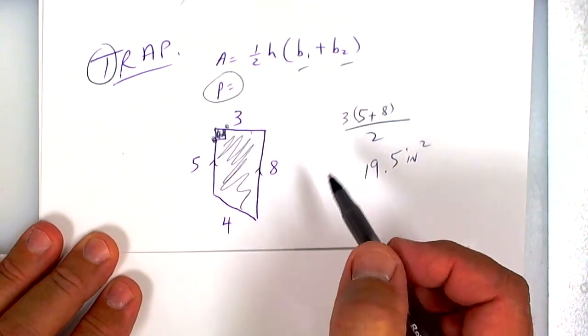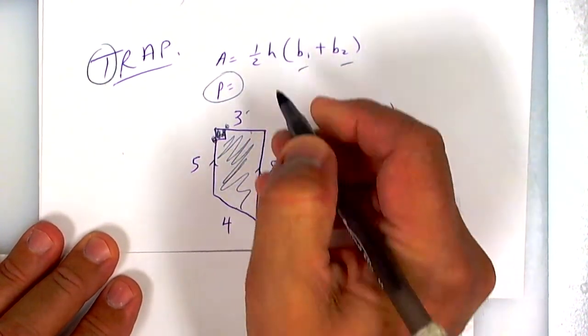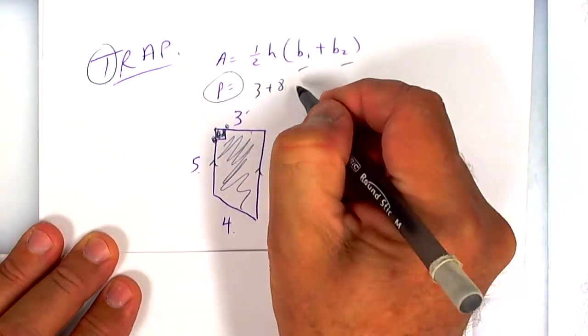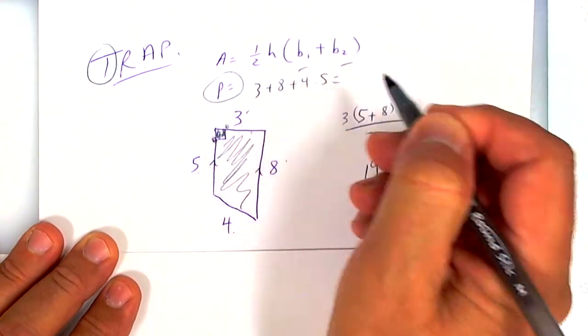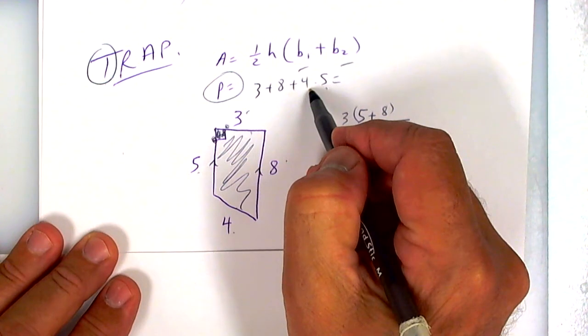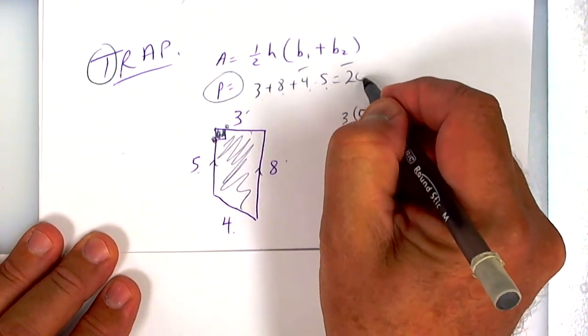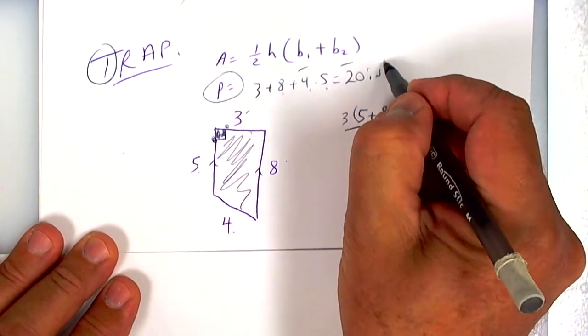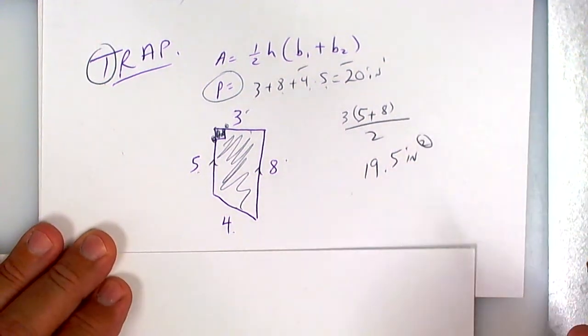Make sure you got 19.5 square inches. It is area, and area is the inside. Perimeter: you have to add up all the sides, so it'd be 3 plus 8 plus 4 plus 5. You add all that up: 9, 17—looks like 20 inches.